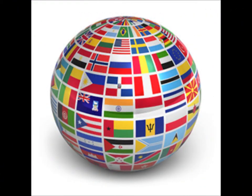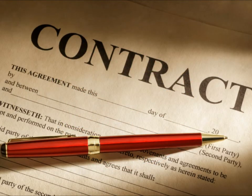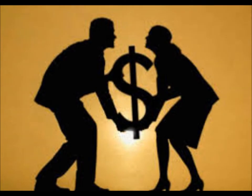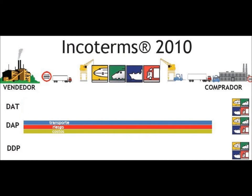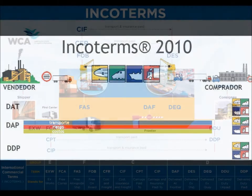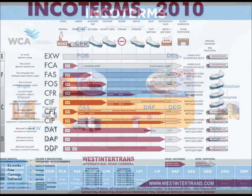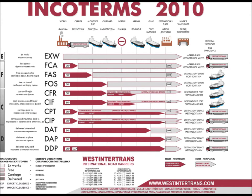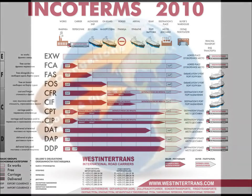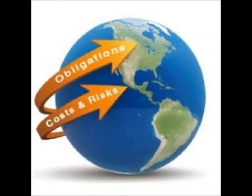When global companies enter into contracts to buy and sell goods, they are free to negotiate specific terms. These terms include the price, quantity, and characteristics of the goods. Every international contract also contains what is referred to as an incoterm or international commercial term. The parties to the transaction select the incoterms, which determine who pays the cost of its transportation segment, who is responsible for loading and unloading of goods, and who bears the risk of loss at any given point during an international shipment.